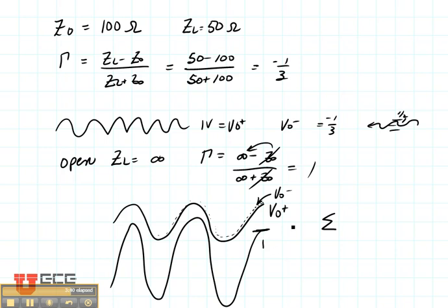The total voltage, V total, is actually V0 plus plus V0 minus, but that's one times V0 plus, or two V0 plus for the case of an open circuit. That means the voltage really did double.